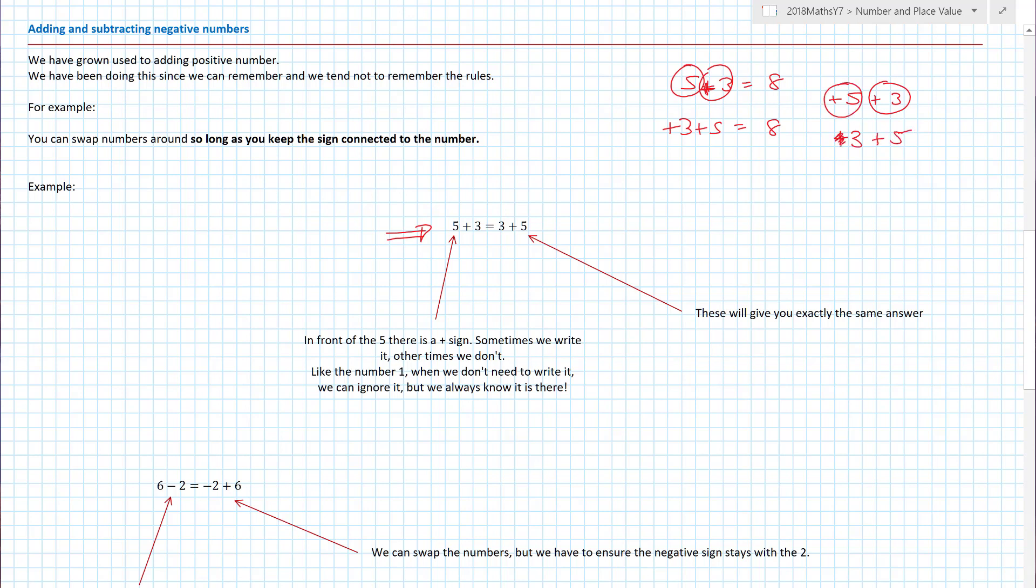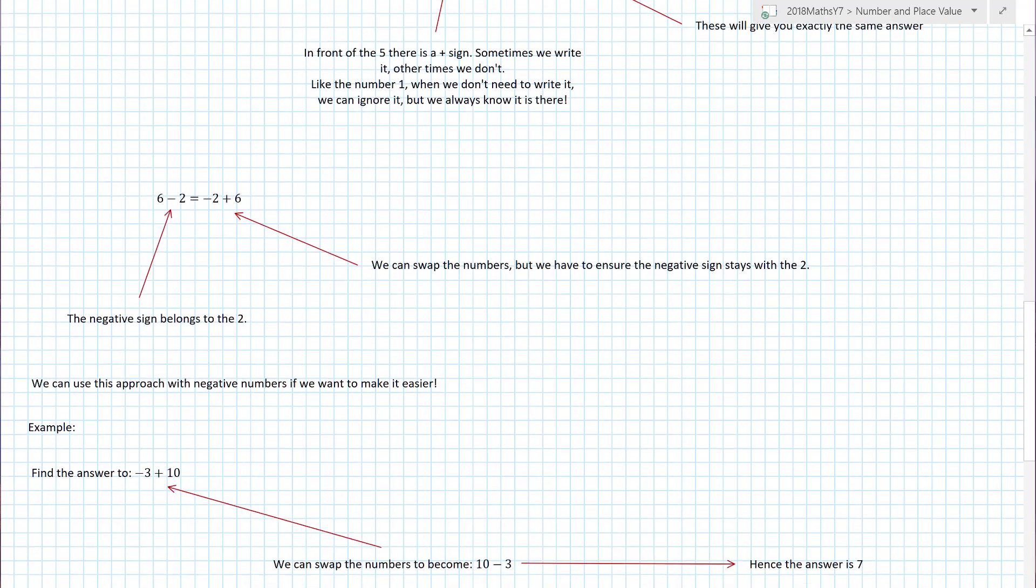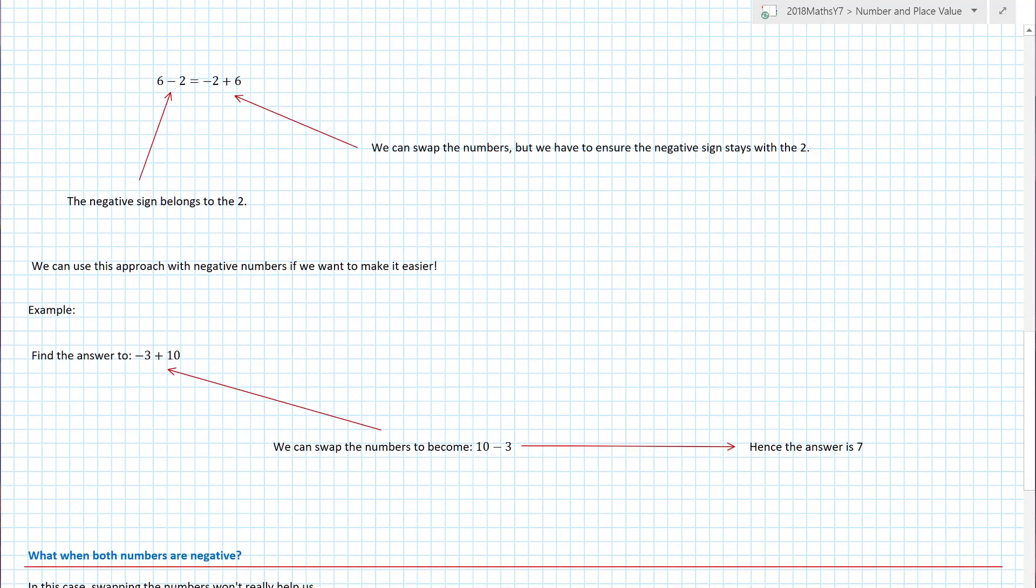So five plus three is the same as: swap that to the beginning, it becomes plus three; swap that to the end, it becomes plus five. And we don't actually need that positive there. Now that actually helps us do negative number questions quite awesomely. Because we know that so long as we keep this little sign here—the one that's in front of the five and the three—so long as we keep them the same, we can still actually work out our answer. And you can say, what does that have to do with the price of fish?